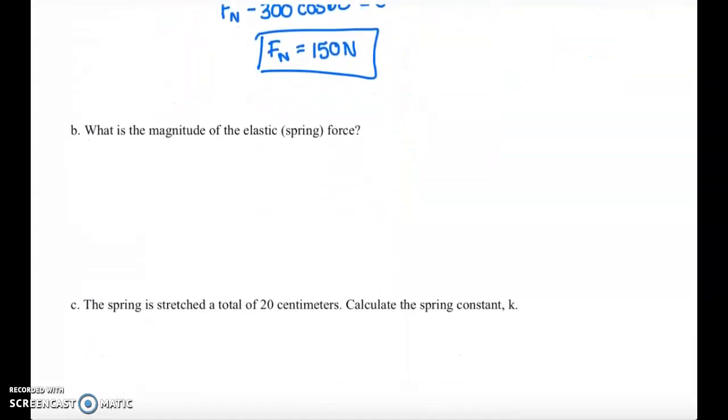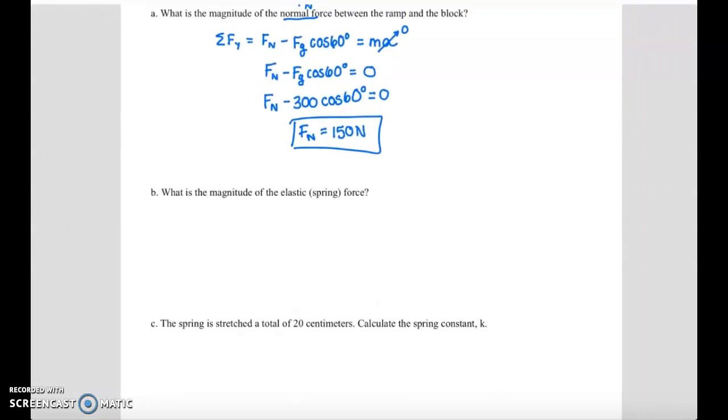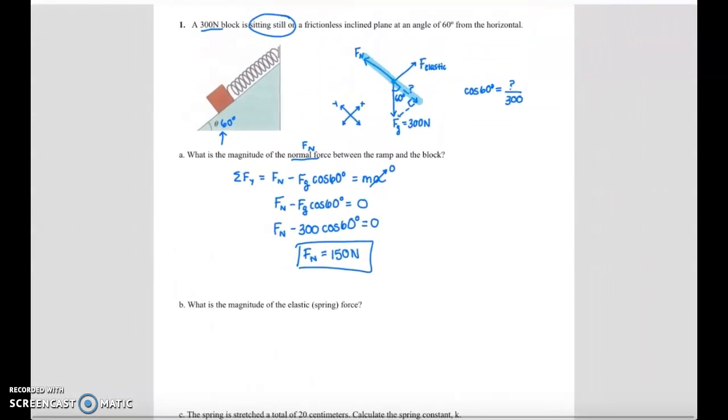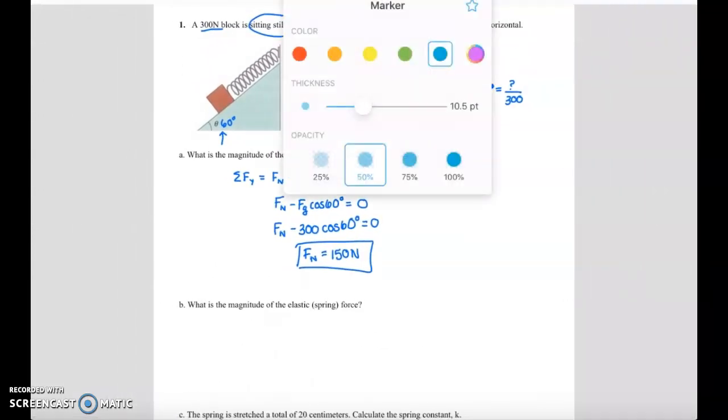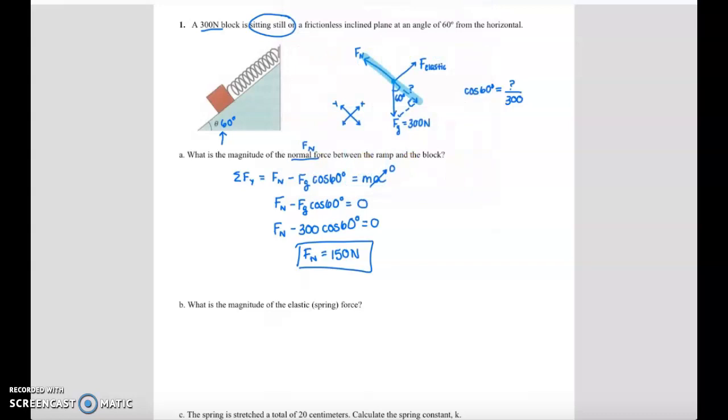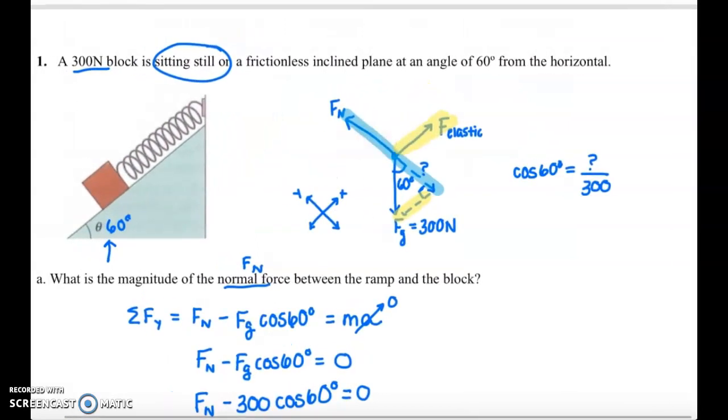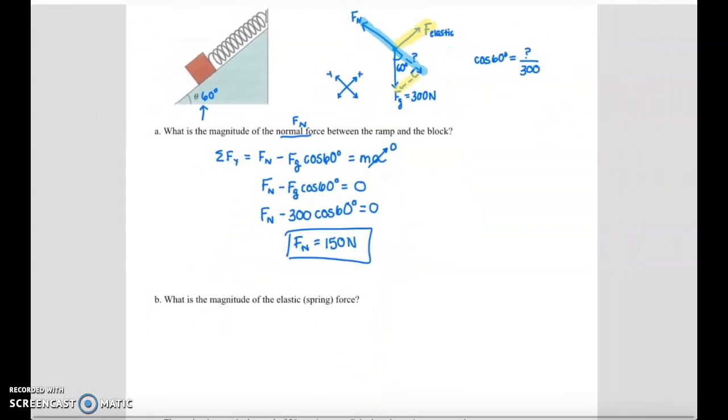In part B, we're asked to find the magnitude of the spring or the elastic force. So this is going to require us looking at the x direction. I see the elastic force up the ramp, and I see a component of the gravitational force down the ramp. Let's write the sum of the forces in the x direction.